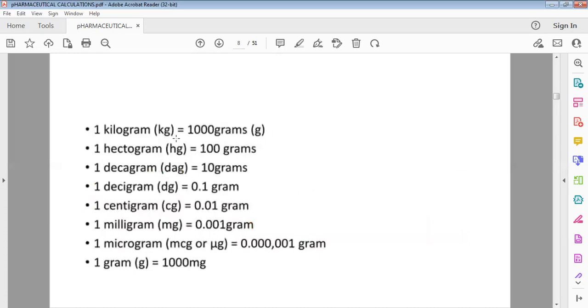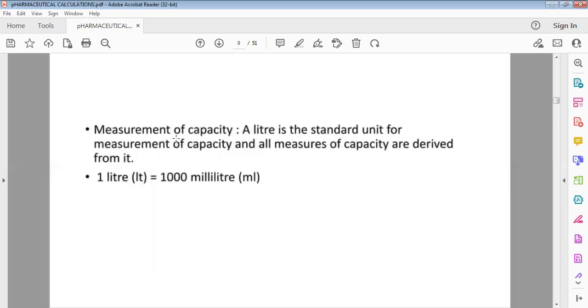We can easily remember this because we use the metric system every day. 1 kilo means 1000 grams. 1 hectogram means 100 grams. 1 decagram means 10 grams. 1 decigram means 0.1 gram. 1 centigram means 0.01 gram. 1 milligram means 0.001 gram. 1 microgram means 0.000001 gram, you have to put 5 zeros. 1 gram means 1000 milligrams.